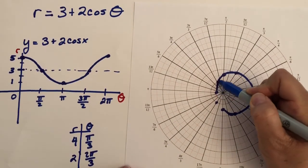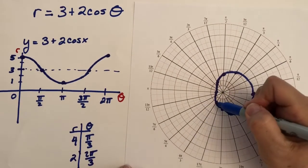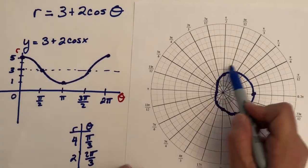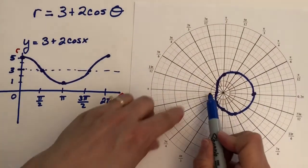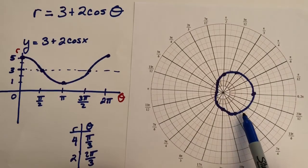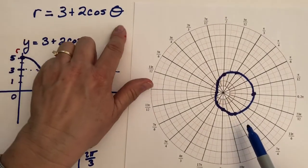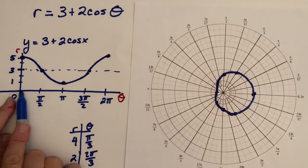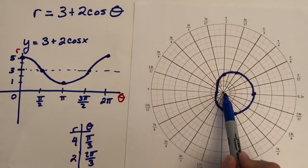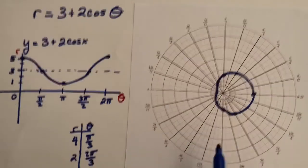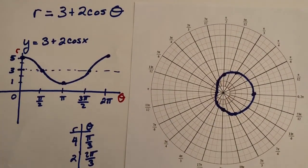This one will have a little bit of a dimple, but there's no way to figure that out without going into more detail. There should be a line of symmetry — this half should look the same as this half. Our key points are correct, and we stayed away from the pole because our r value never reached zero. I hope this is enough for you to start practicing graphing limaçons.